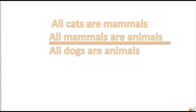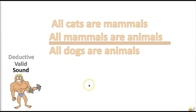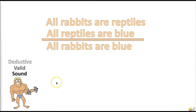Here is a valid deductive argument — a categorical syllogism. A line separates the conclusion. For the first step, to see if it's valid, we're just going to assume that the premises are true. If they're true, it would be impossible for the conclusion to be false — that's how we determine if it's valid. Here's another example of a valid argument.